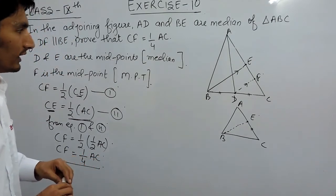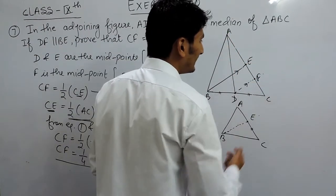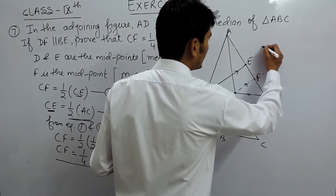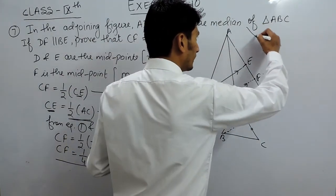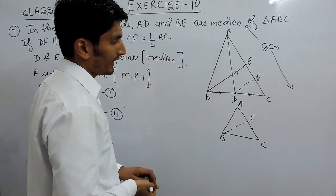Okay, if you are not able to get it, it's better to assume AC any length. Let's say I am assuming AC as 8 cm. So I am assuming that the length of AC is 8 cm.